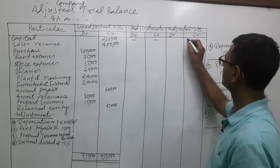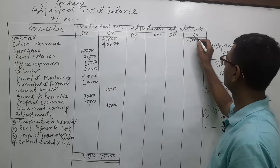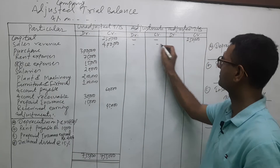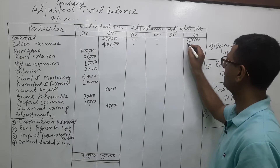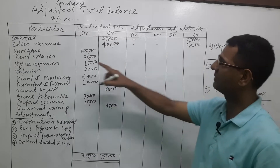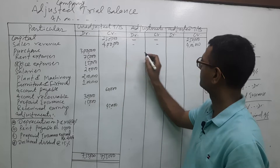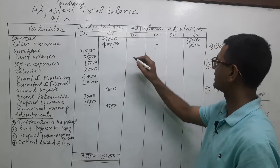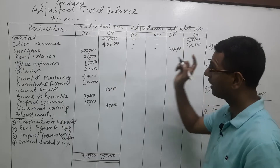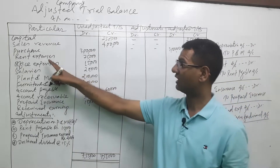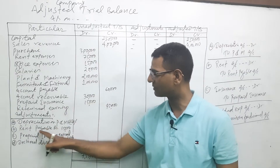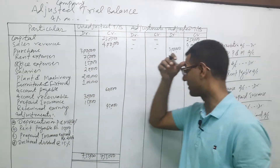For capital, it has a credit balance — borrowing 2,50,000. Sales revenue, so no adjustment. Now we will look at the rent payable of 75,000.